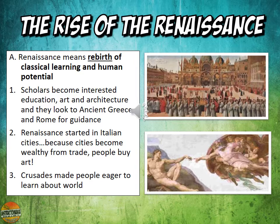So the fall of feudalism obviously needs to bring a rise. Our rise will come in the Renaissance. If you forgot from your vocabulary, Renaissance means rebirth — the rebirth of some of the classics and also looking towards human potential, the things that humans have the ability to do. Scholars became more interested in education, art, and architecture, and they looked to ancient Greece and Rome for inspiration and guidance. This is especially important because most of this started in Italian cities — the home of ancient Rome. This happened there mostly because these cities were the wealthiest from trade, and people were able to spend that money on art.